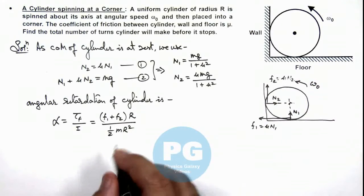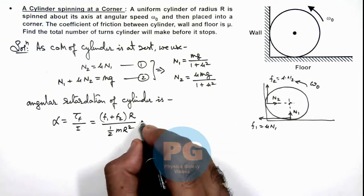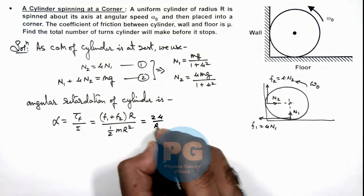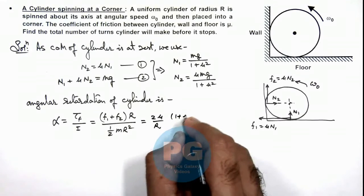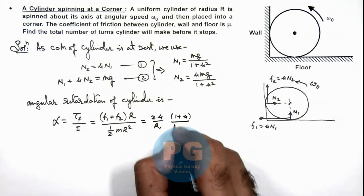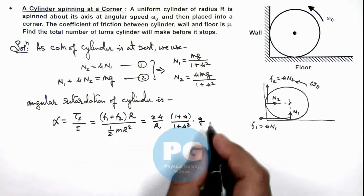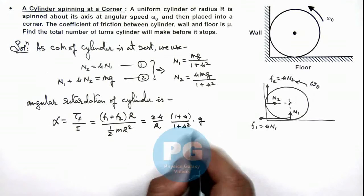So if we substitute the values, this will give us 2 mu by r multiplied by 1 plus mu divided by 1 plus mu squared, multiplied by g as m gets cancelled out. And this is the term which is left over.